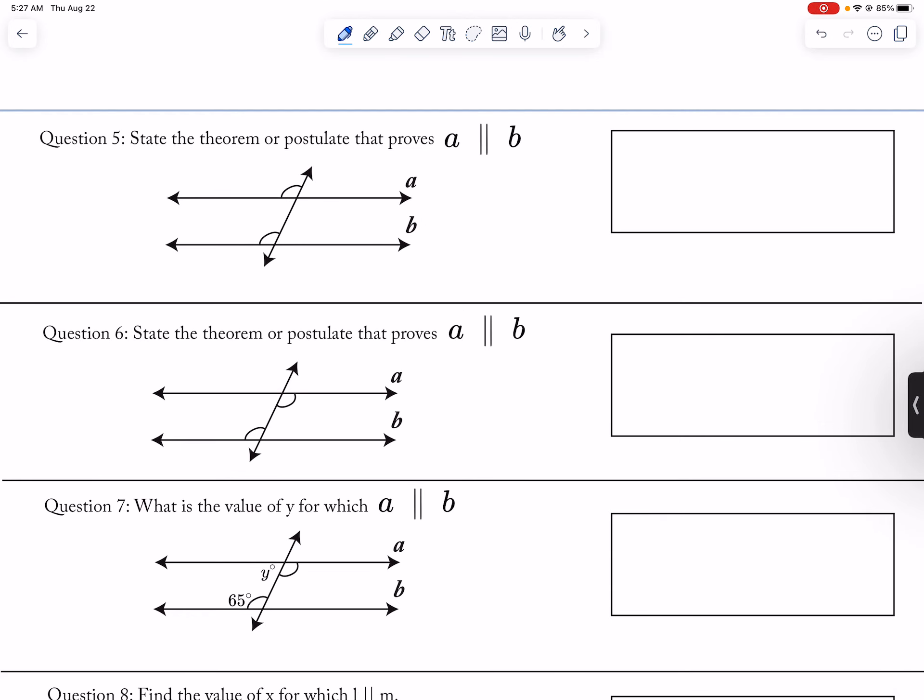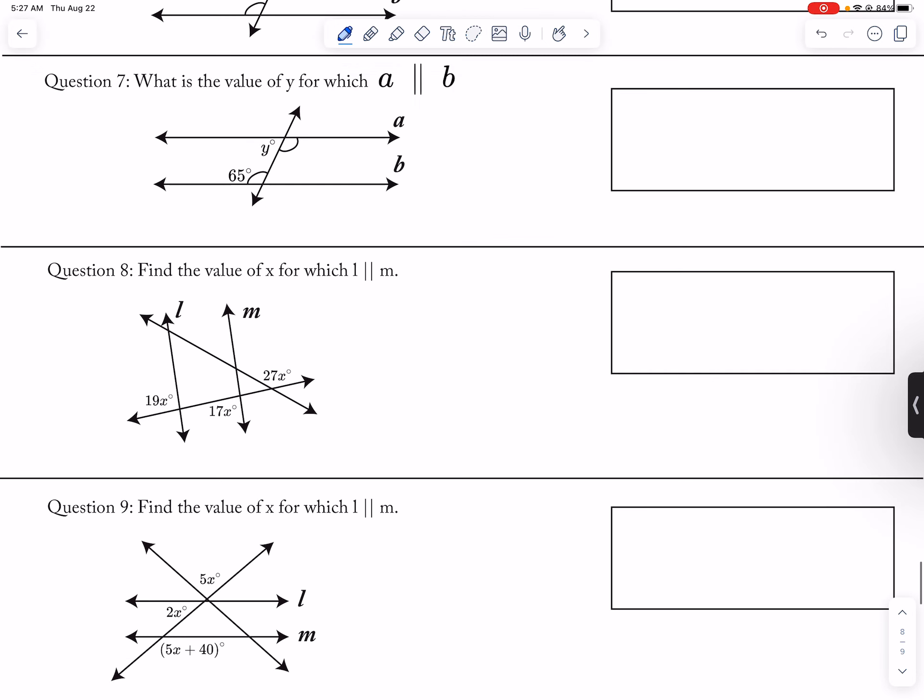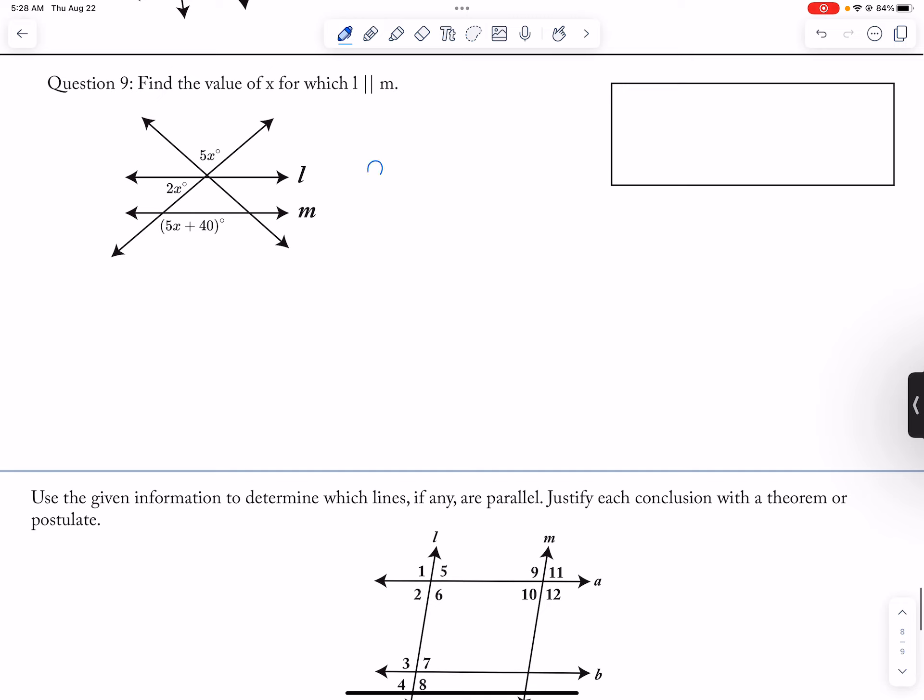Okay. All right. So five is proving converse to the corresponding angle theorem. And then seven is same side interior. I didn't ask you for the justification, but I just wanted you to know. Okay. So nine, let's see. So 2X plus 5X plus 40 is equal to 180. So 7X plus 40 is 180. So 7X is equal to 140. So X is equal to 20.